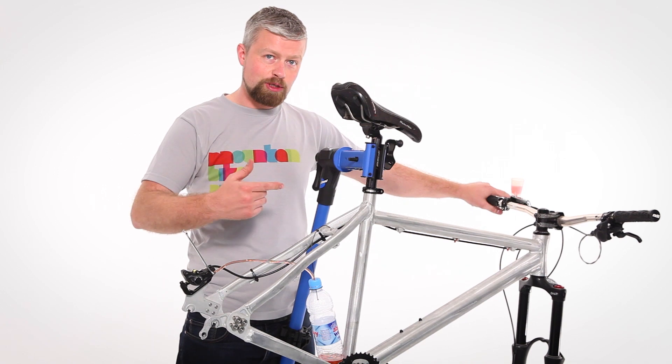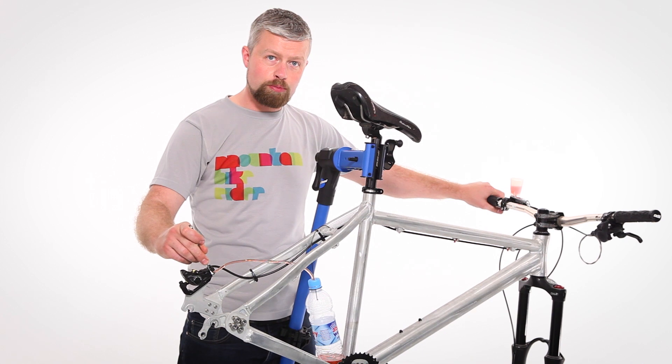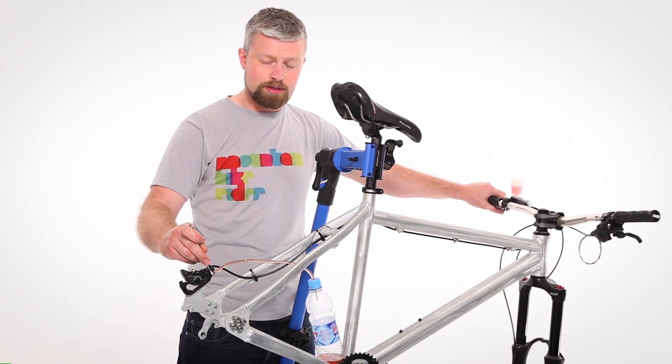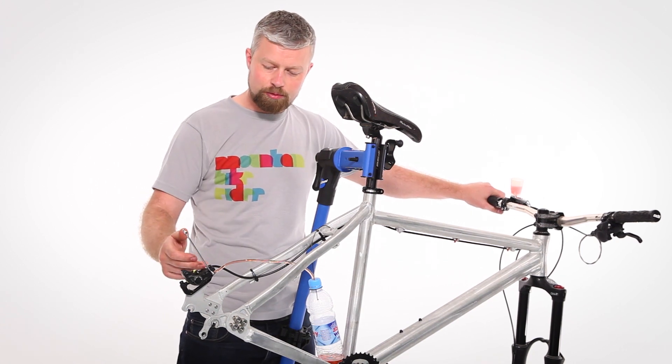For the next step, we need to squeeze our brake lever and with our spanner on the bleed nipple, we're going to open it two or three times for about half a second. This will remove any final air bubbles that are in the caliper.